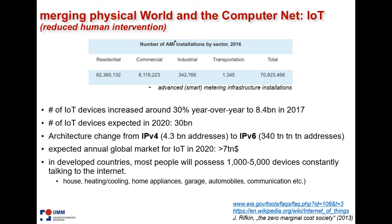People say that in developed countries, most people will possess between 1,000 and 5,000 devices. So we have a device cloud around us, and you think it's a big number — but if you really think about it, there are so many little devices that are Internet of Things devices.